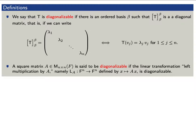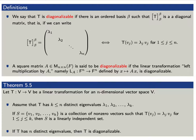Here's our big theorem. Let T be a linear transformation between a vector space V and itself. Assume first that T has k distinct eigenvalues where k is less than or equal to n. If a set S consists of non-zero vectors v sub j such that T of v sub j equals lambda j times v sub j, then S is a linearly independent set. Moreover, if T has n distinct eigenvalues, then T is a diagonalizable linear transformation.